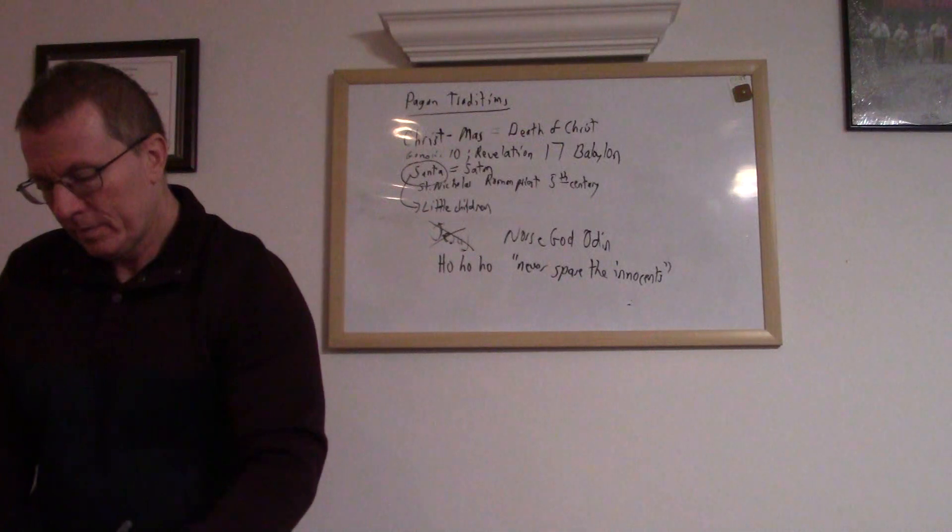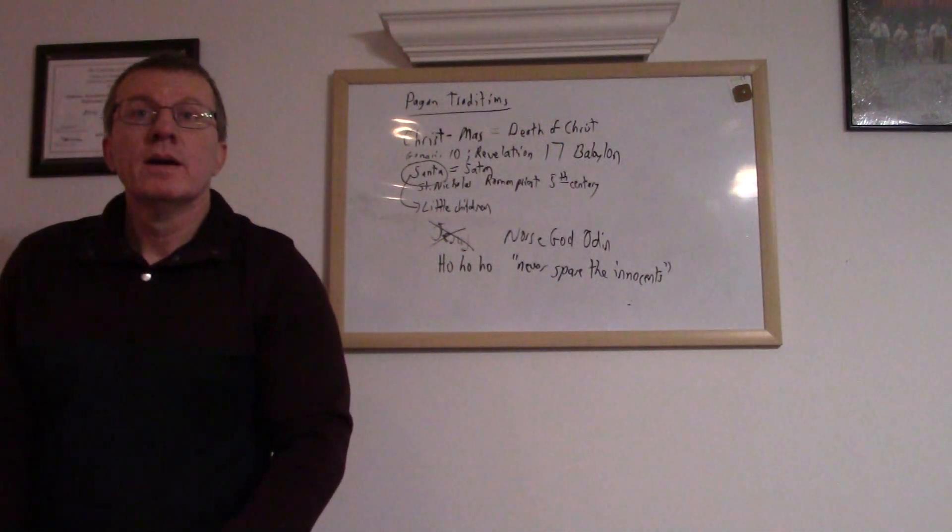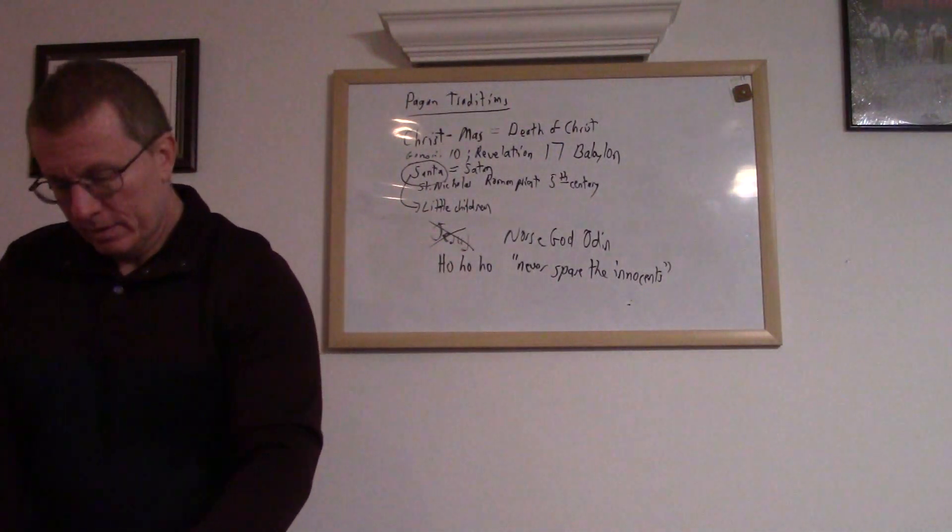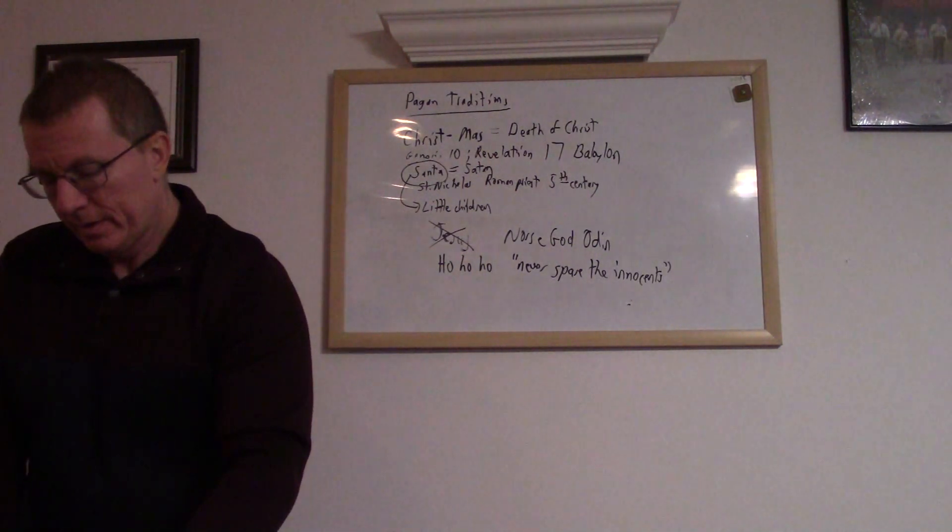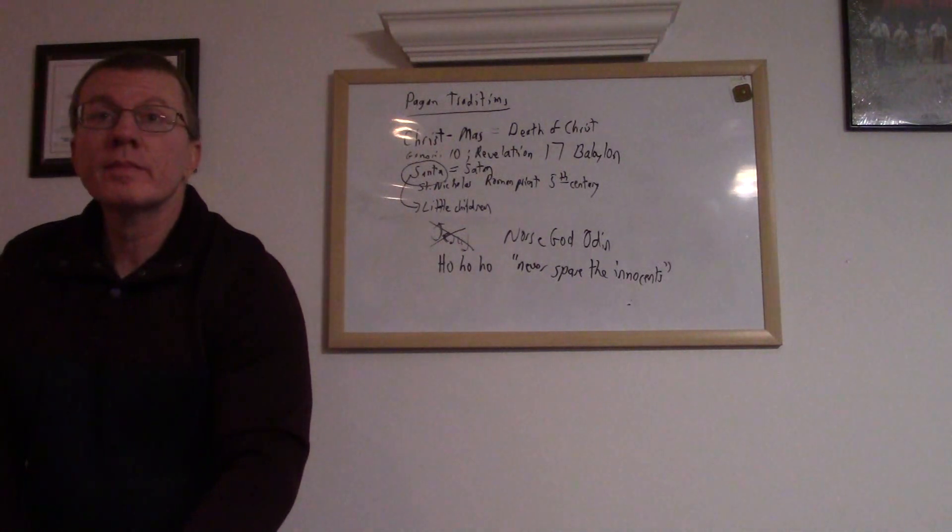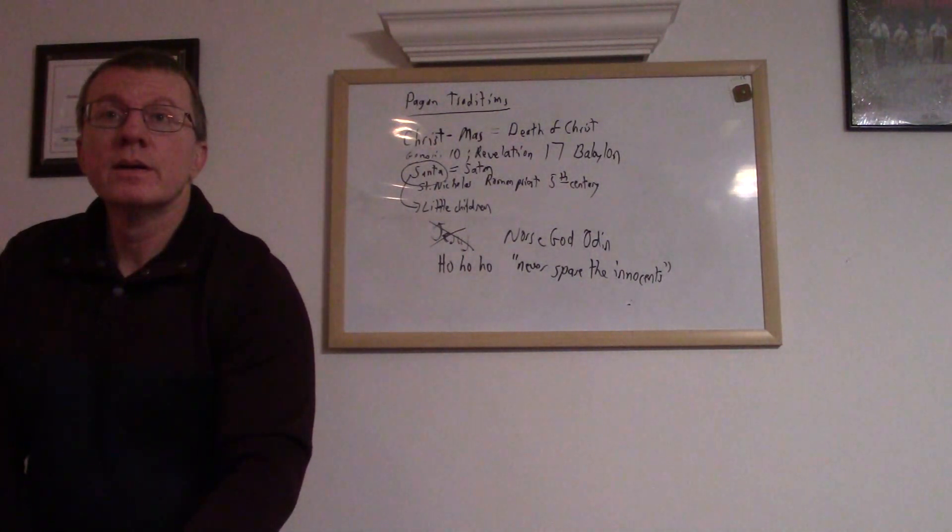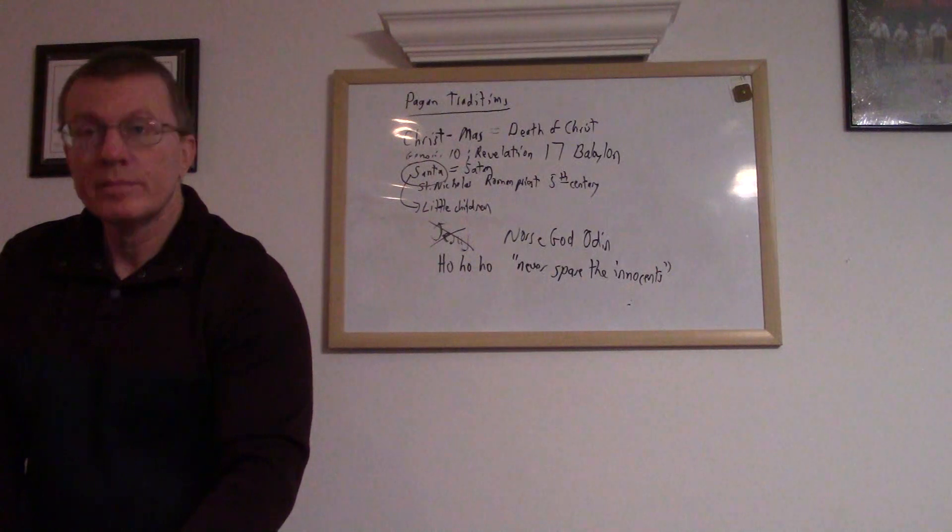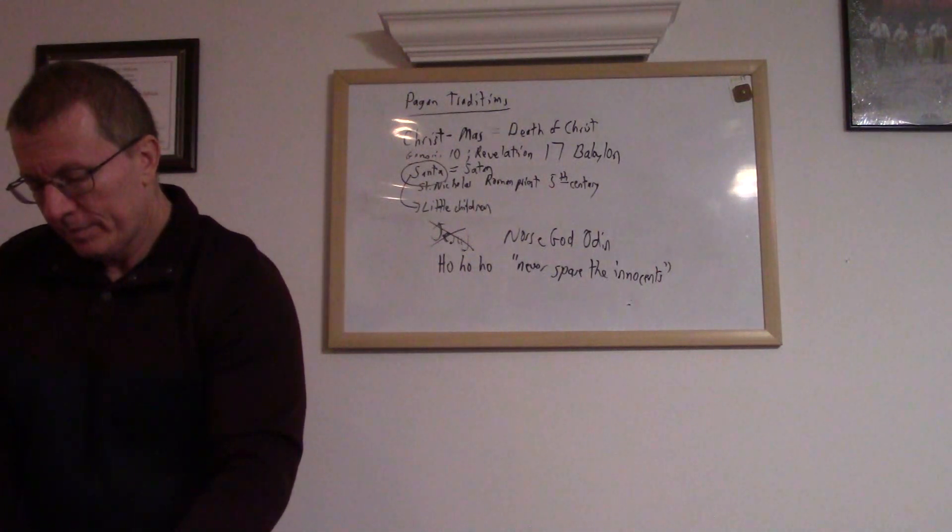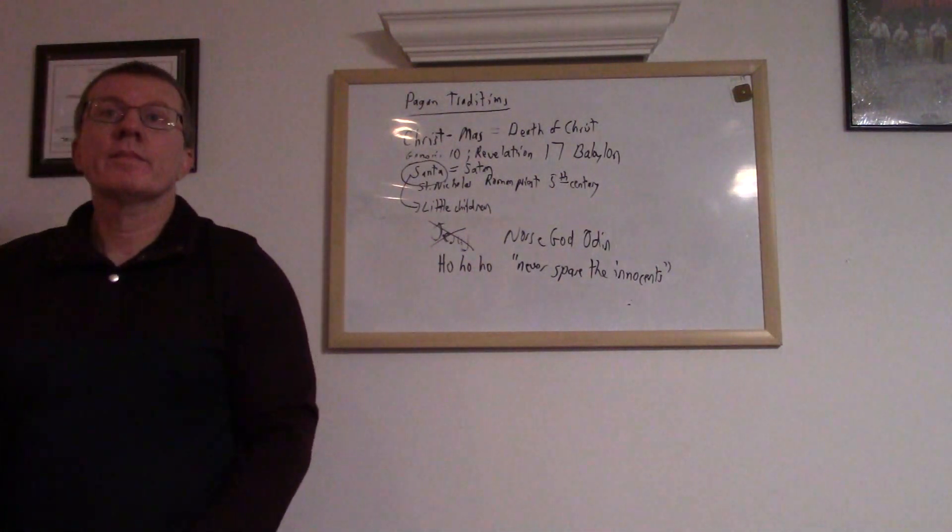Elizabeth became pregnant with John the Baptist, and that happened to be toward the end of June. And John the Baptist is six months older than Jesus Christ, so that means that Jesus Christ would be conceived sometime toward the end of December and be born sometime at the end of September or the 1st of October.